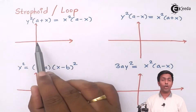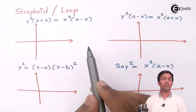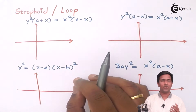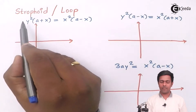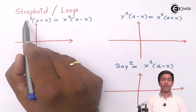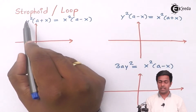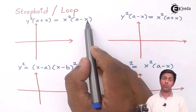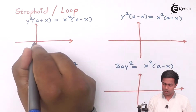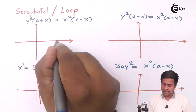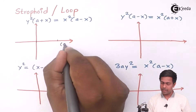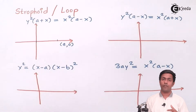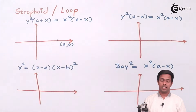To find the point of intersection of the loop with the x-axis, we consider y equal to 0, because on the x-axis the value of y is 0. If y equals 0, the whole left side becomes 0 and we get x equal to 0 and x equal to a — two values. So we plot these two points: one is (a, 0) and the other is (0, 0), and the loop will pass through both.